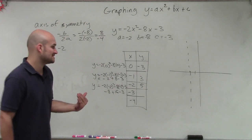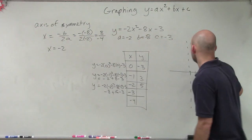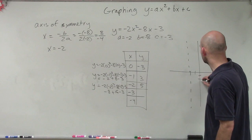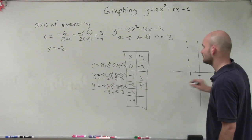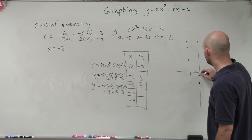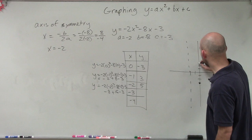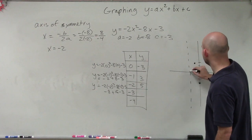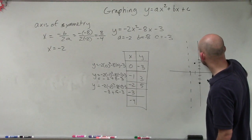So let's go and plot these points. At x equals 0, I have negative 3. At x equals negative 1, I'm up at 3. And then at x equals negative 2, I'm up at 5.